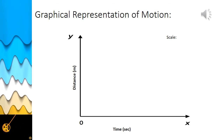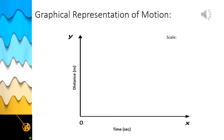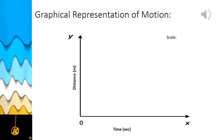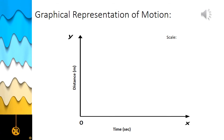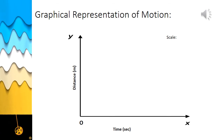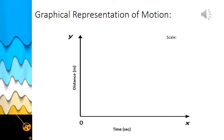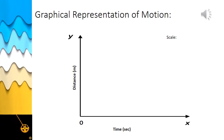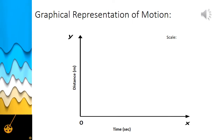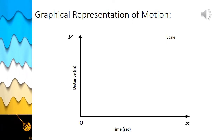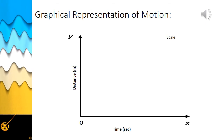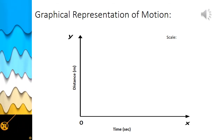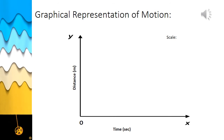Now let's see how the graphical representation of motion can be done on graph paper. First, you need to draw two lines at right angles to each other. Mark the horizontal line as OX — it is known as the X axis. Similarly, mark the vertical line as OY — it is called the Y axis. The point of intersection of OX and OY is known as the origin O.